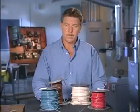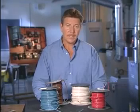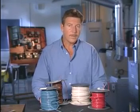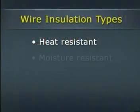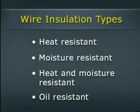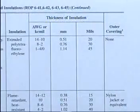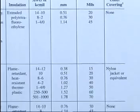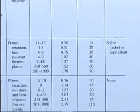Not only is the size of the conductor important, but so is the type and thickness of the insulation that protects the conductor. Wire insulation can be heat resistant, moisture resistant, heat and moisture resistant, or oil resistant. The National Electric Code also establishes guidelines regarding the types of insulation used on conductors.